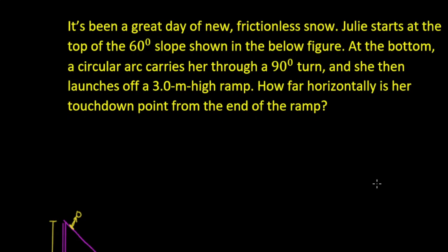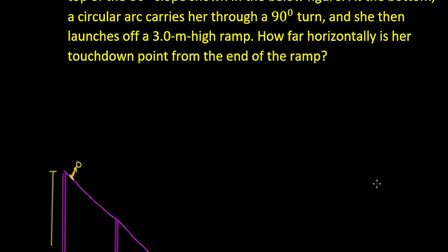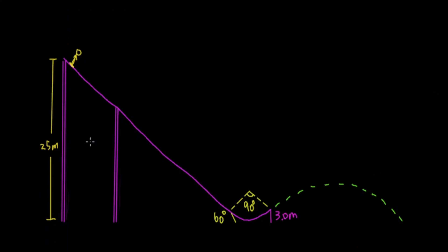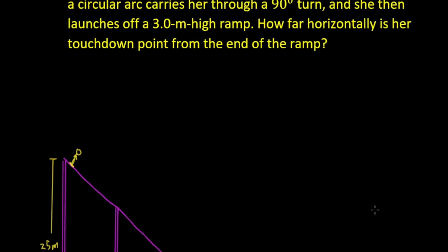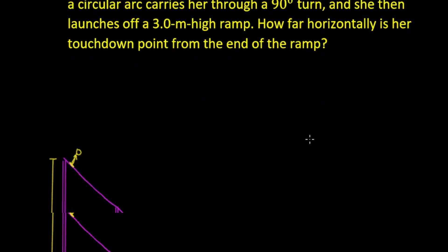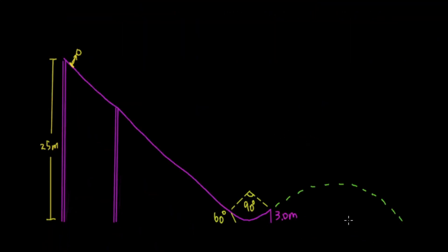Let's solve this question. To explain the situation, I'll use the picture here. So this person, Julie, will slide down the ramp, then move across the arc, leave the ramp, perform a projectile motion, and then land. The question is asking how far horizontally is her touchdown point from the end of the ramp, so we are calculating the horizontal distance here.